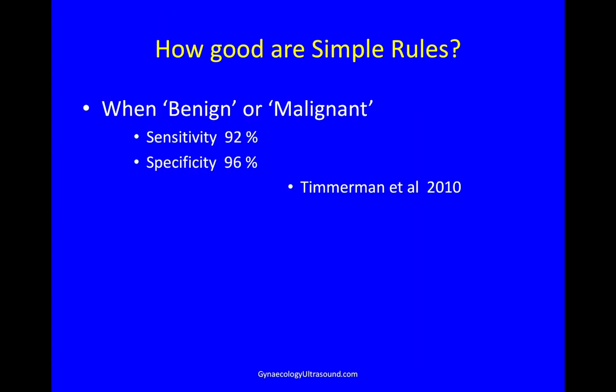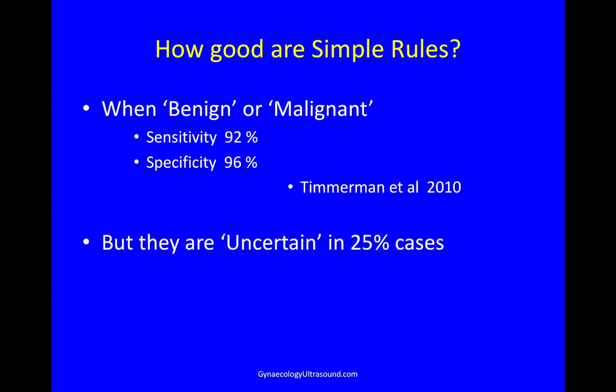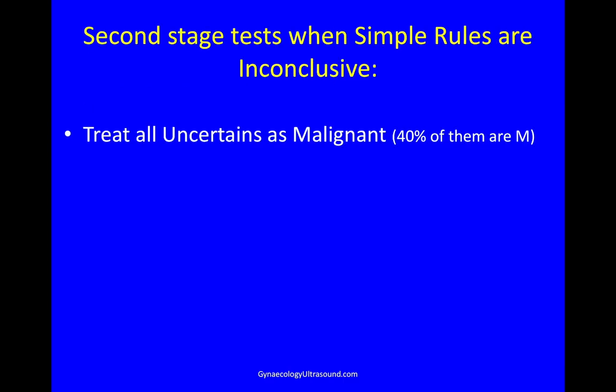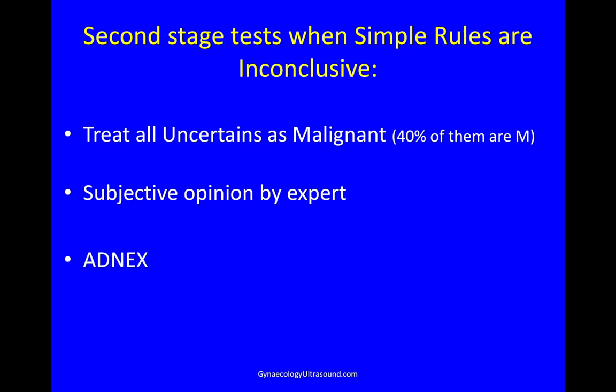How good are simple rules? If they're conclusive — either benign or malignant — they're very good. But they're uncertain in nearly a quarter of cases, and that's when you need a second test. When the simple rules are inconclusive you could treat them all as malignant, because nearly half of them are. Or you could get a re-scan done by an expert sonologist. Or you could use ADNEX and be your own expert.